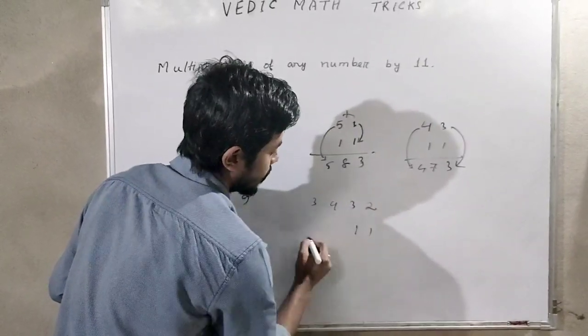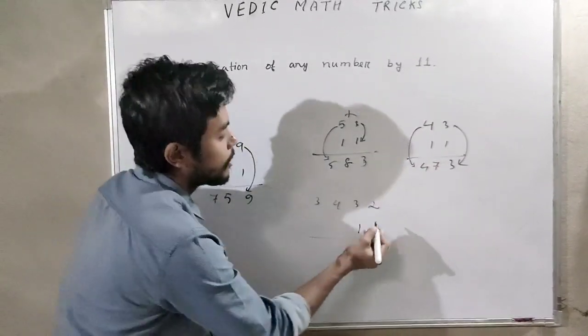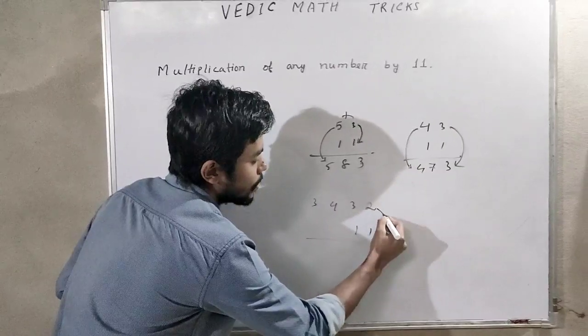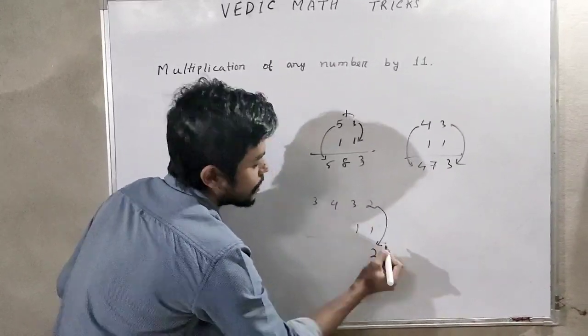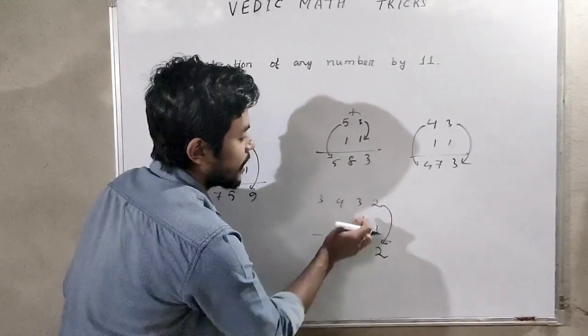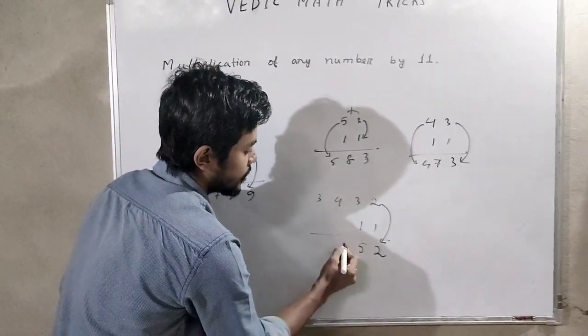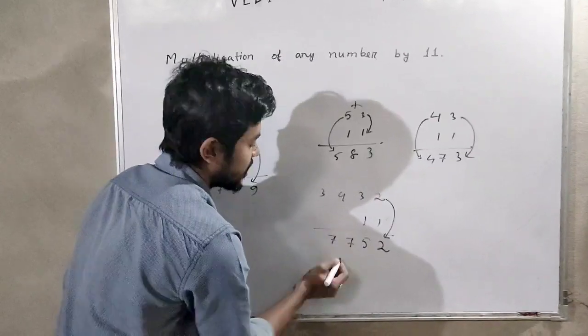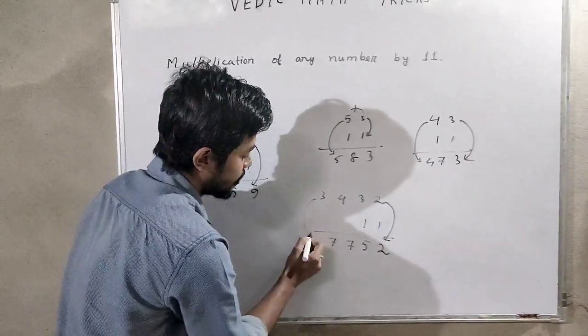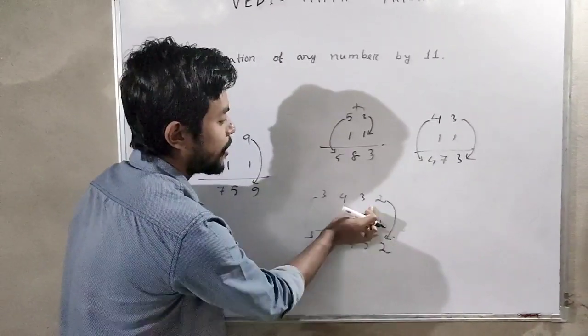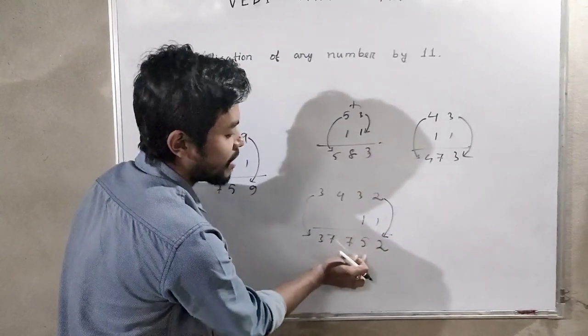3432 by 11. So what we do here? 2 is placed in one space. Then 2 plus 3 is 5, 3 plus 4 is 7, and again this 3. So 3432 into 11 is 37752.